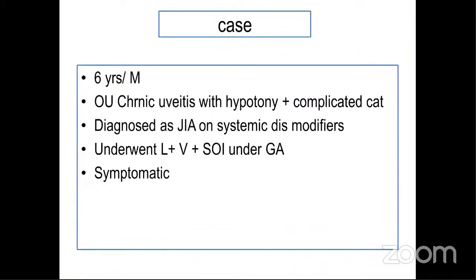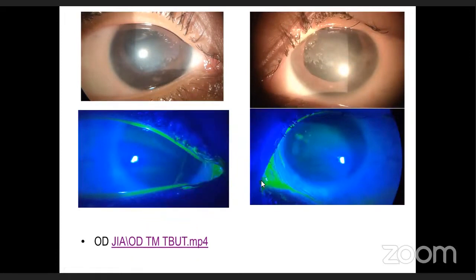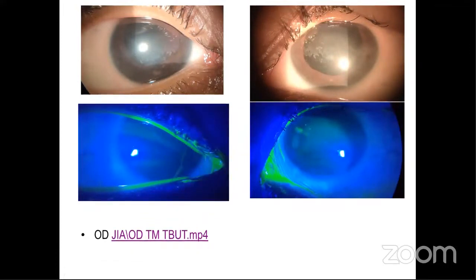Coming to my last case: a 6-year-old male presented with chronic uveitis with hypertension and complicated cataract. He was diagnosed with juvenile idiopathic arthritis at a very early age and was on disease modifiers like methotrexate and hydroxychloroquine under the supervision of a rheumatologist. He underwent lensectomy, vitrectomy, and silicone oil tamponade, yet the patient remained symptomatic for a very long time. The anterior segment photograph showed band-shaped keratopathy with synechiae. The fluorescein staining pattern of the right eye showed a significant low tear meniscus height, very low tear film breakup time, and tear film debris.